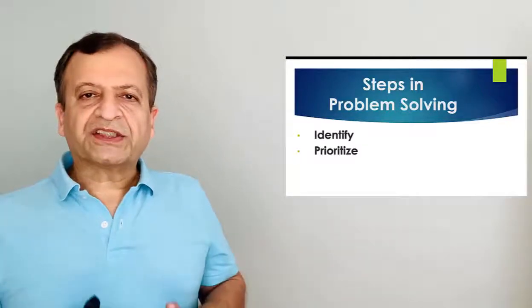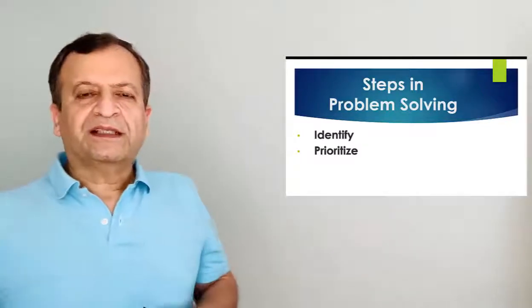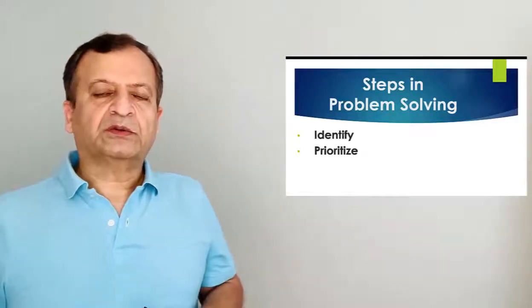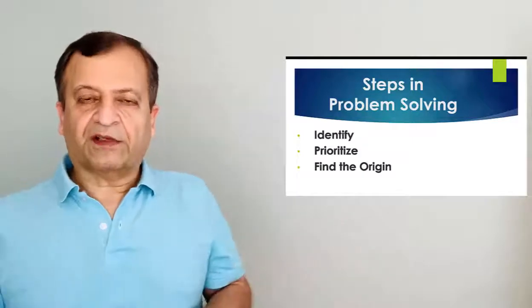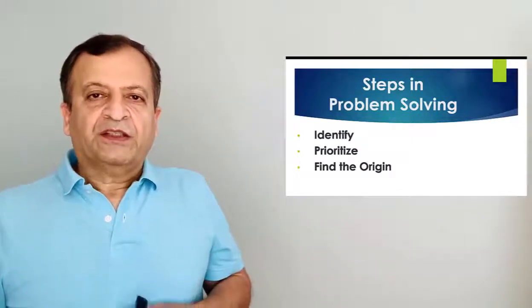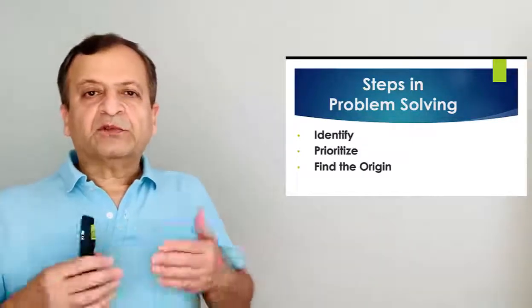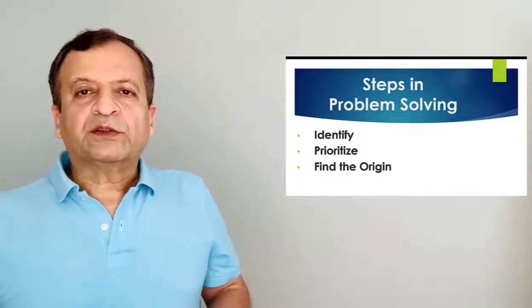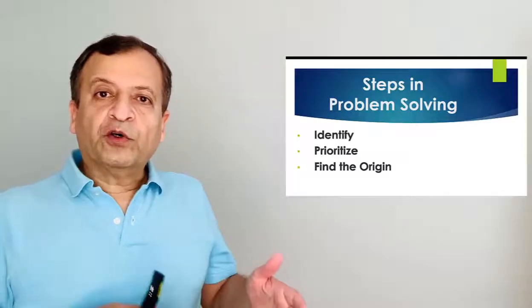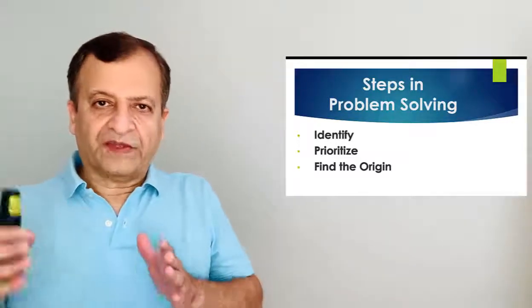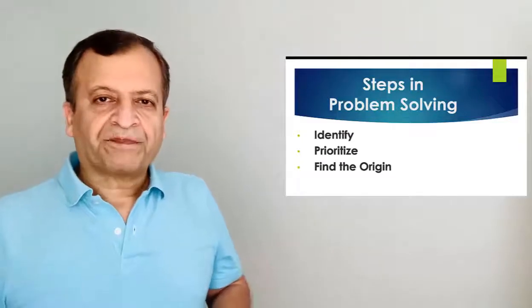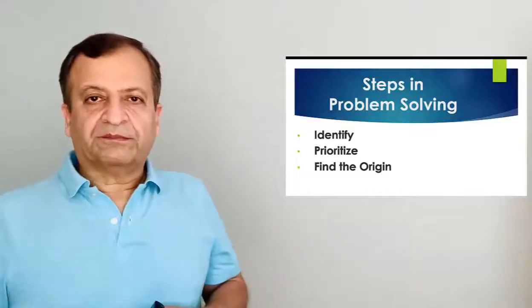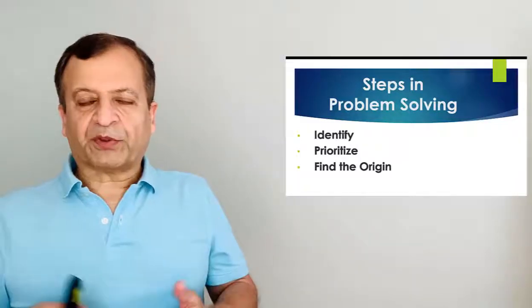And then, you need to find out the origin of the problem. Talk to the section, to the department, to the person who is involved or the persons who are involved or the teams. Talk to them and find out what was the origin, what was the cause, what was the reason, why it was not considered before getting into that stage and becoming a problem. Because when it's an issue, you can solve it much easier than when it gets into a problem.